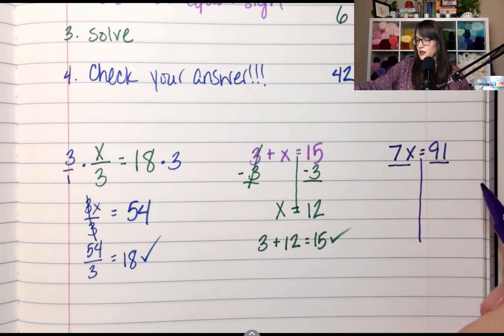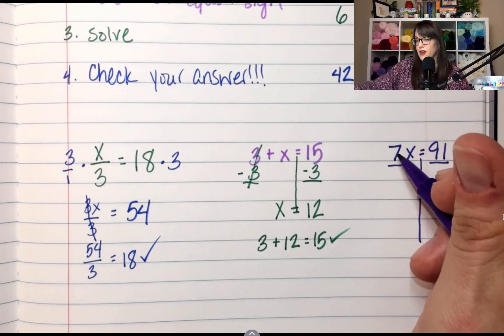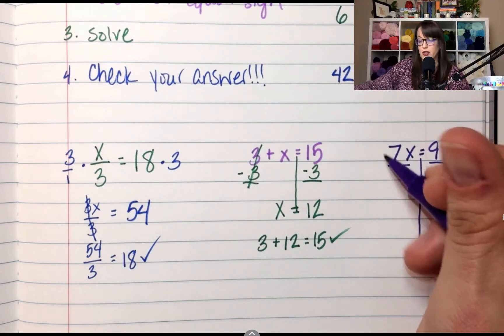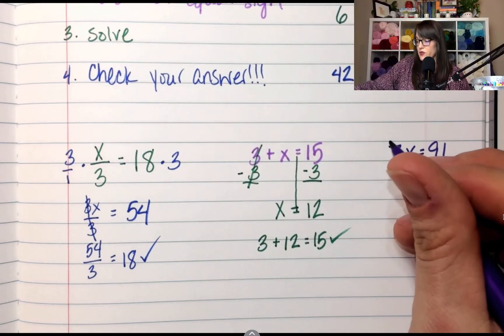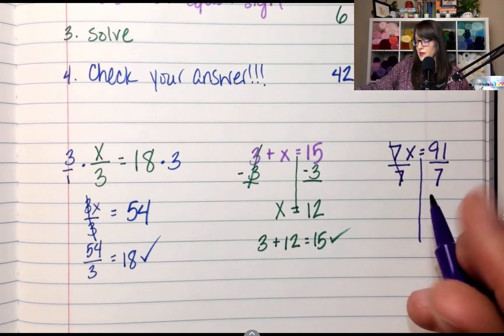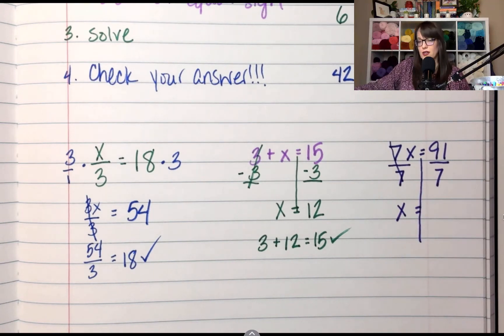So I'm drawing my line. I show division by drawing a line under both sides. What number is going to go underneath that line? I divide by the coefficient, this is the coefficient, so I divide by 7 on both sides. 7 divided by 7 is 1 because we did that up top, so this is X.